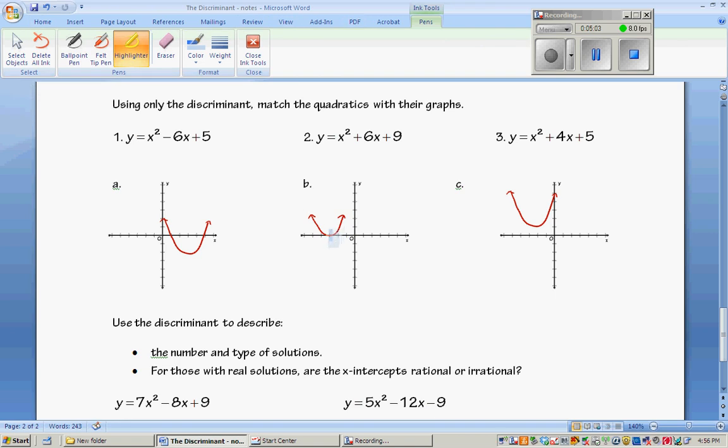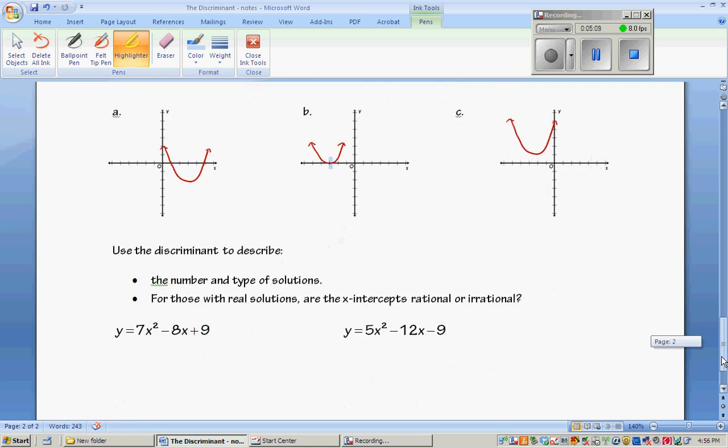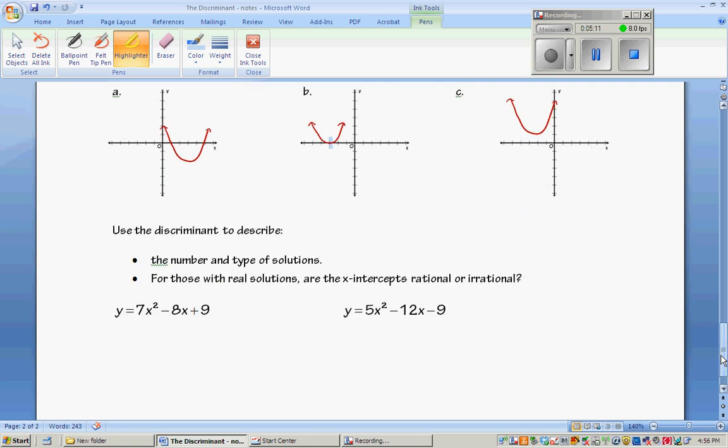And lastly you have one that doesn't cross at all. So what you want to do is try and figure out and match those. Then lastly, you want to use the discriminant to describe the number and type of solutions. And if we have a real solution, are the x-intercepts rational or irrational?